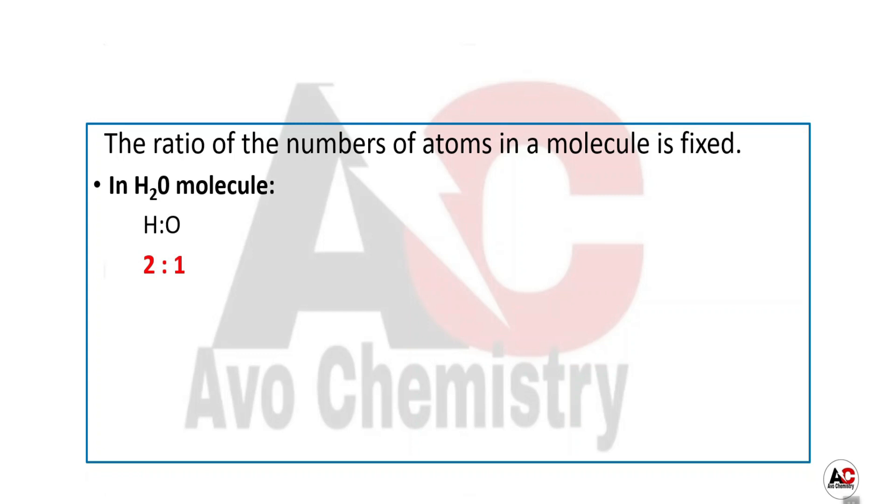They combine only in a definite proportion to form a molecule or compound. The combination ratio is fixed. When two hydrogen atoms and one oxygen atom are chemically connected and combined, there will be an attractive force and it will be a water molecule.